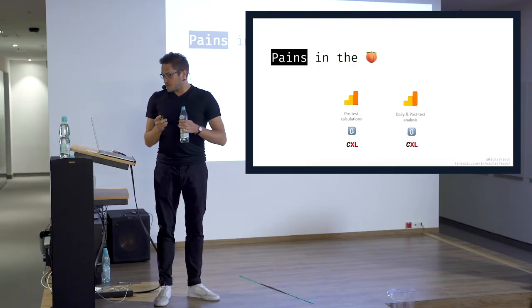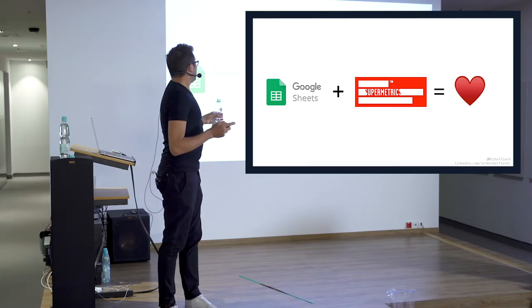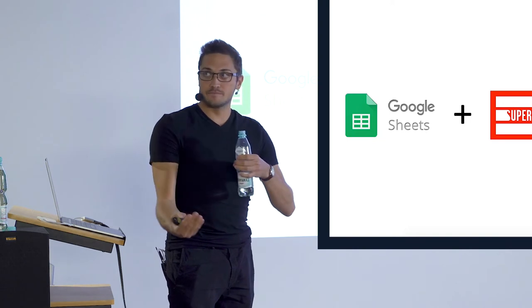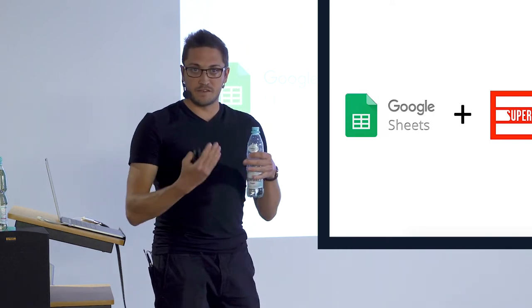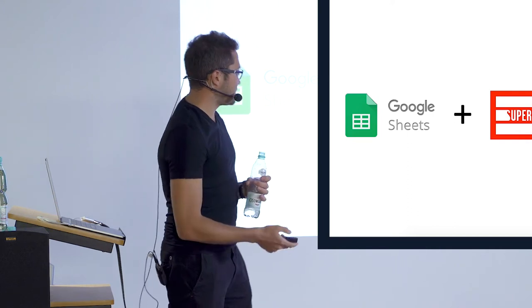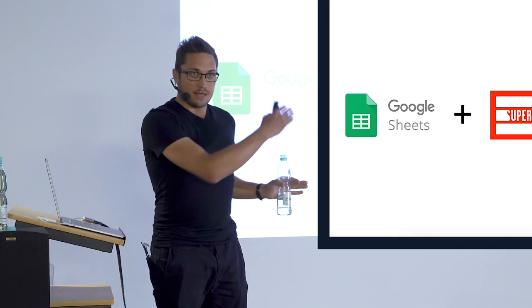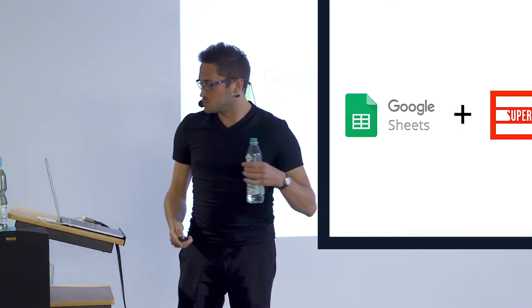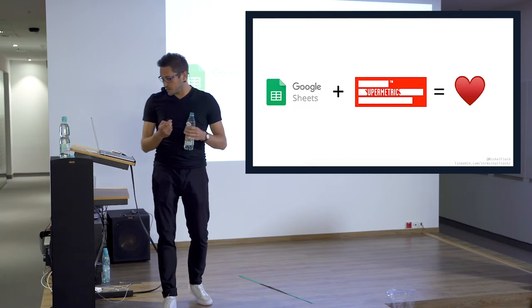And basically what came to the rescue for me was something called Supermetrics. I don't know who of you know it. Hands up. Okay. The same people who do experiments. Basically Supermetrics is an add-on for Google Sheets that allows you to export data from various analytical tools like Google Analytics, Facebook ads. I guess that they have also Power BI or similar things. And I thought, okay, let's use it just to resolve all of those pain points. At that point, I was also talking to people checking how other companies are approaching scaling the experimentation process. And something magically happened after a few days. So let's move to the solution.